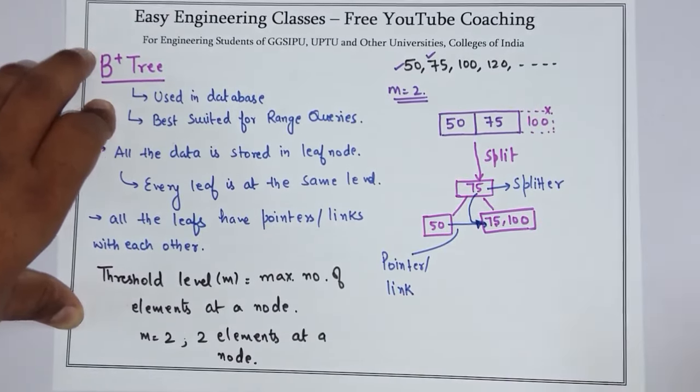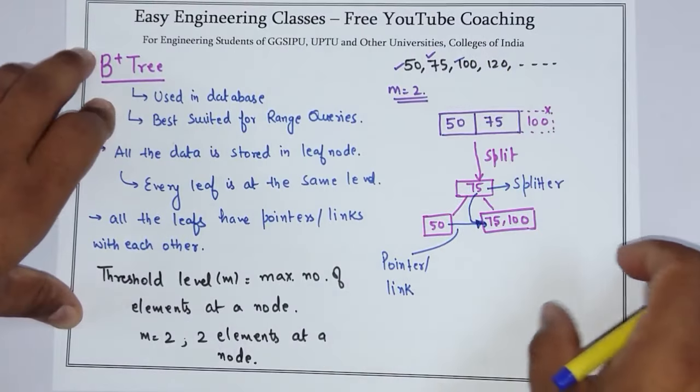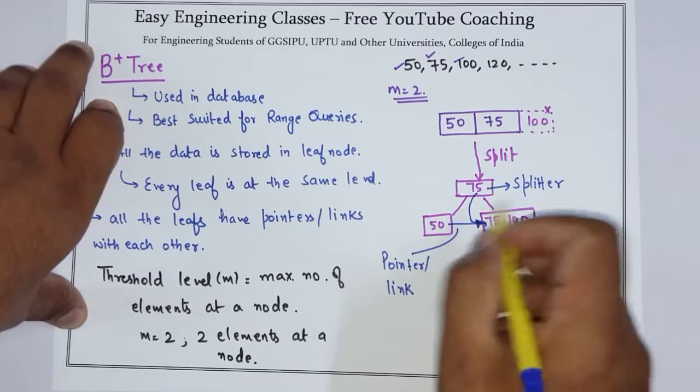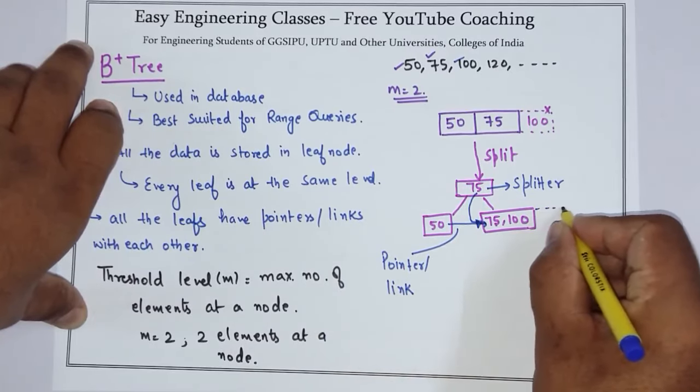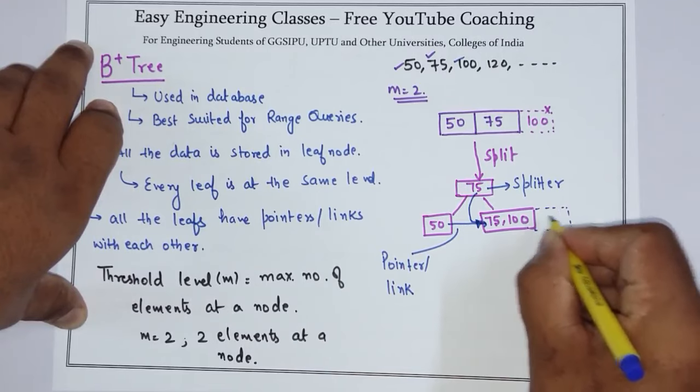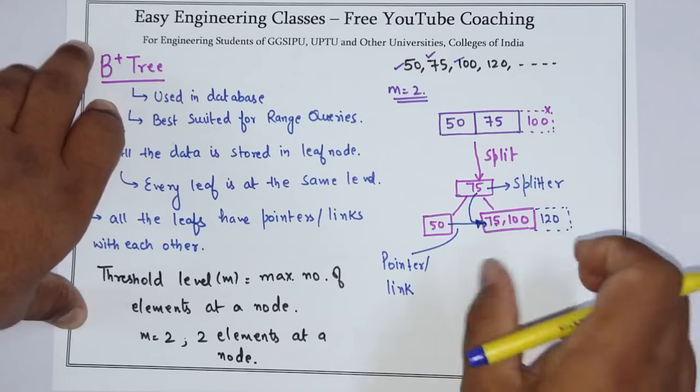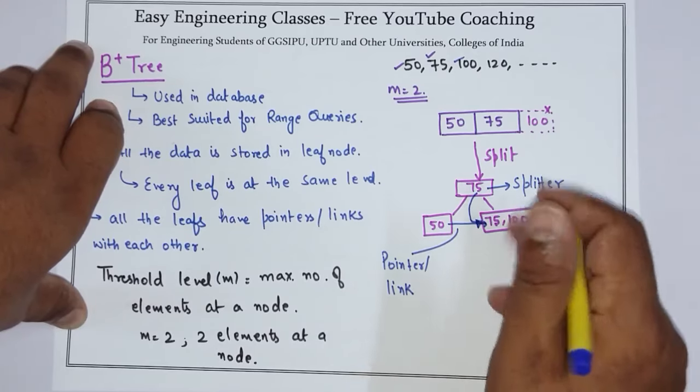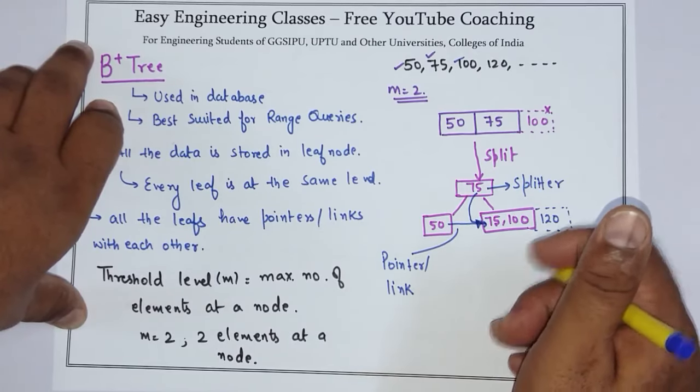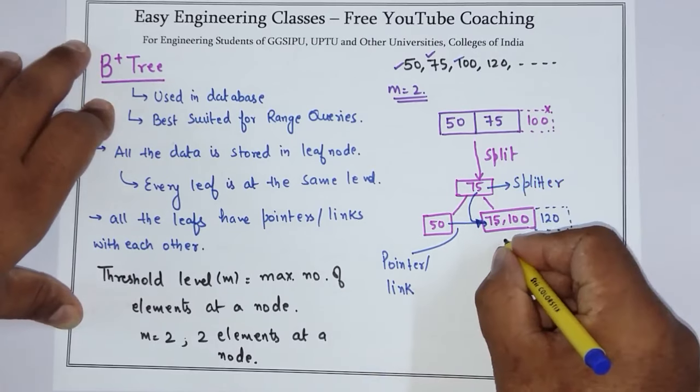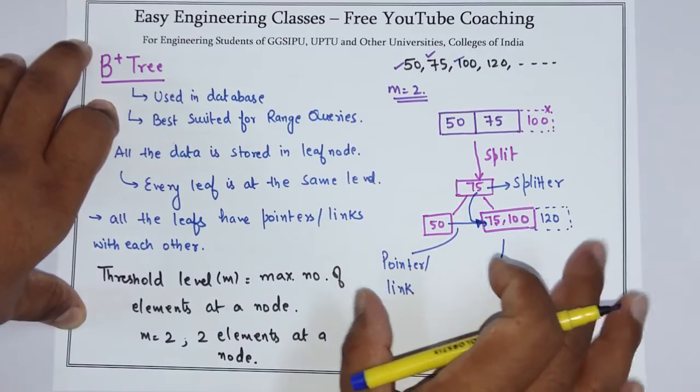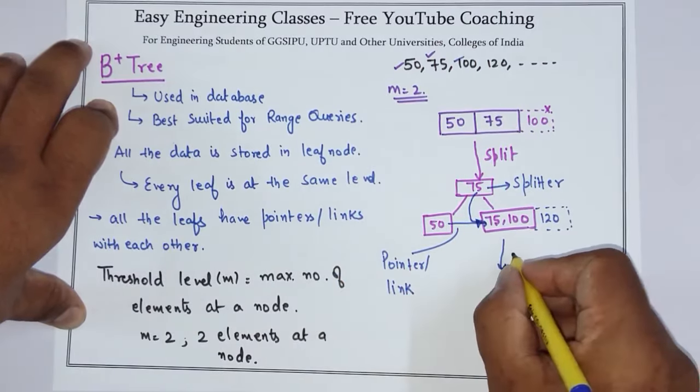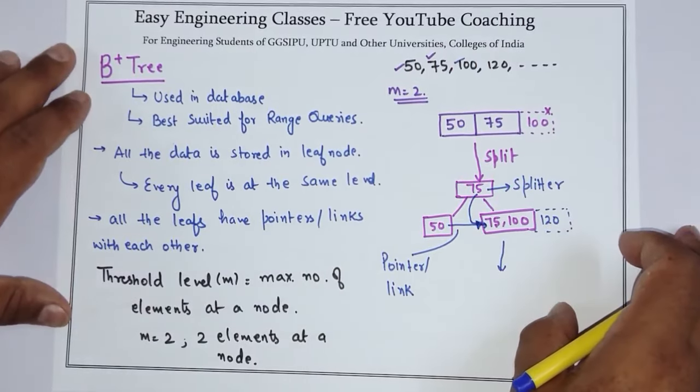Now suppose 100 is done. Now we have 120. We will place 120 here. But it cannot be done, so further we will split it down. In this way you will continue till you enter all the elements. And all the elements should be at the same level. So this is about B plus tree.